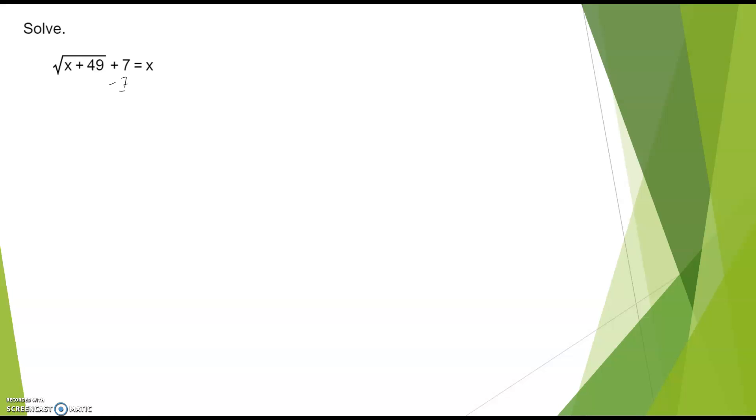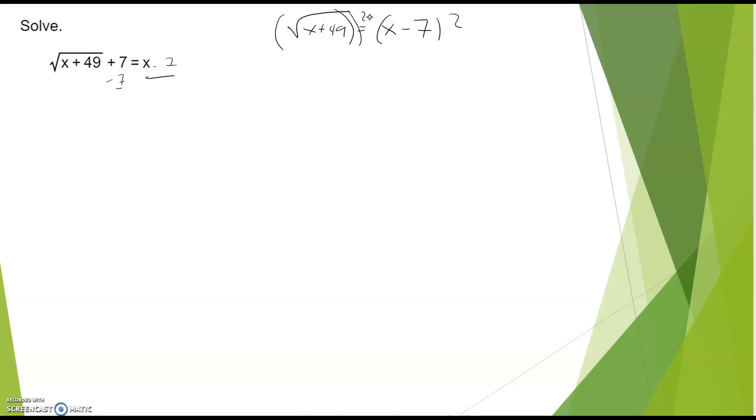How about this one? This one's a little more complicated. And then I get the square root of x plus 49 equals x minus 7. All right, so I'm going to square both sides. x minus 49, the square root of that squared is x plus 49. And then this one I would have to square out. So I'm going to FOIL it. x squared minus 7x minus 7x plus 49. And now look what we have, a quadratic.